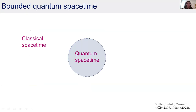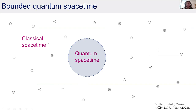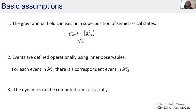Thinking about these three questions, we started to consider the following model: suppose I have a classical spacetime outside and in a bounded region I have a quantum spacetime. For the classical spacetime I use the same definition as in general relativity — a network of observers who can exchange light rays. Inside the quantum part we rely on the most basic assumptions we could think of, which are reasonable in the weak-gravity regime.